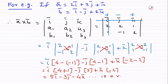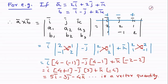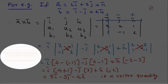This result is a vector quantity — it has both magnitude and direction, unlike the scalar dot product. We can confirm that the cross product always gives a vector quantity. In the next lecture, we'll see the further part of this topic.